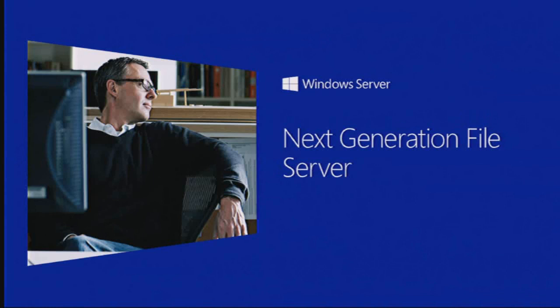The first thing we're going to look at is the next generation file server built into Windows Server 2012. We have lots of really neat features powered by something called SMB3. SMB3 is the new version of the server message protocol, which allows us to move files around the network in a far more efficient way. It also lets us do really fast handoffs on file servers, and there are extra features that don't require SMB3, such as data deduplication and storage spaces that allow us to almost virtualize our storage.